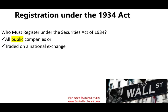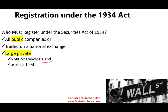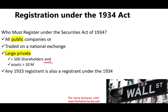Also, large private companies with more than 500 shareholders and assets greater than $10 million must register — though the rules now allow up to 2,000 shareholders as long as 500 are not accredited investors. And anyone registered under the 1933 Act also needs to register under the 1934 Act, since if you issue stocks to the public, you must continuously publish reports.